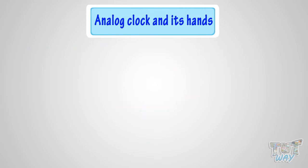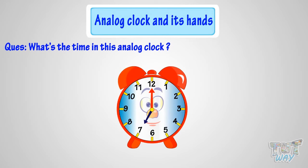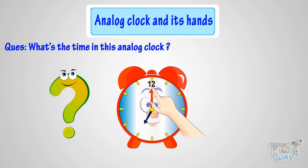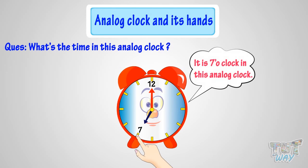Here we have another example. Can you tell me what's the time in this analog clock? When the minute hand is at 12, it is time to the hour. But to which hour? The hour hand tells the hour. As the hour hand is pointing at 7, so it's 7 o'clock.